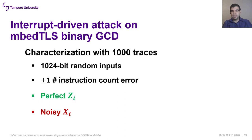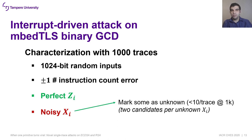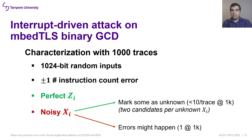Using an interrupt-driven attack, we developed a side-channel attack on the MBTLS binary GCD primitive. We captured 1,000 traces for random node inputs and recovered the control flow information for each trial. We observed a plus-or-minus one error in the instruction counts; however, it is possible to deal with it. The recovery of every ZI was perfect, but we observed some errors in XI. We developed a procedure to mark uncertain XI as unknown, with each unknown XI leading to two algorithm input candidates. Using this procedure, we observed fewer than 10 unknown XI per trace, and only one trace had an error in XI.